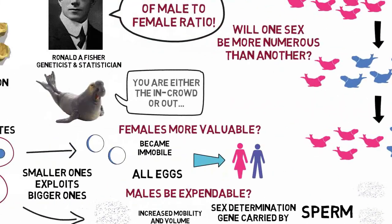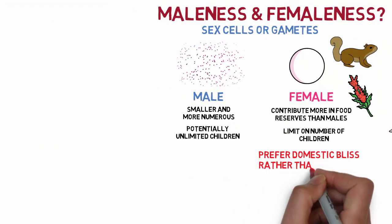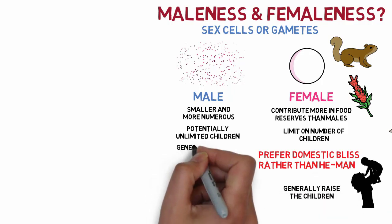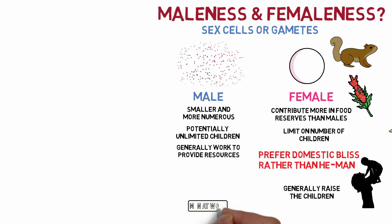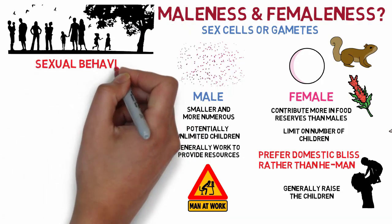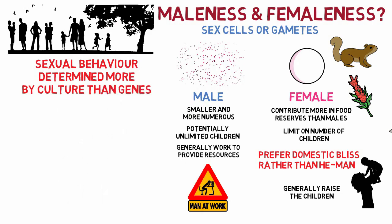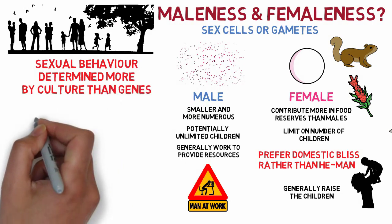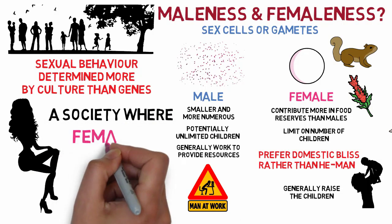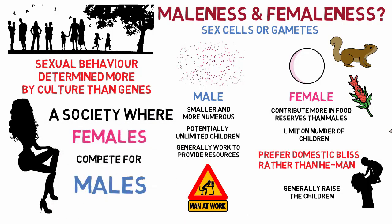For humans, females perhaps play domestic bliss rather than the He-Man strategy. Mothers generally do more work raising children, while fathers often work hard to provide material resources poured into children. Human societies that are promiscuous and harem-based exist, showing that for humans this is determined more by culture than by genes. An example is how females tend to dominate in advertising themselves sexually compared to males. Dawkins concludes that this seems to point to a society where females compete for males rather than vice versa.